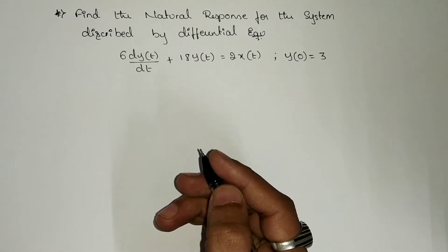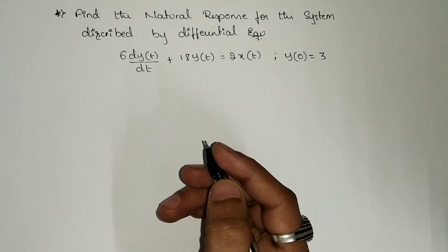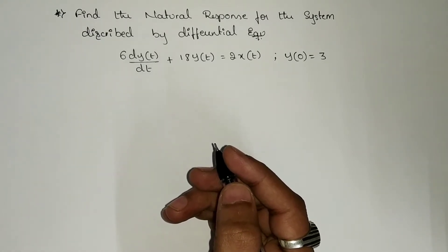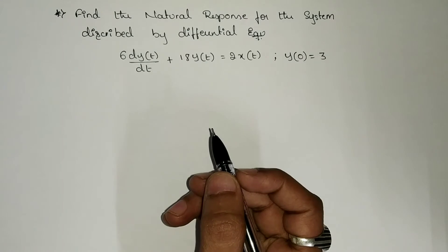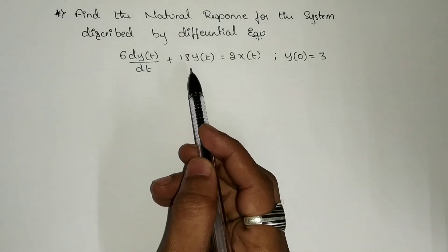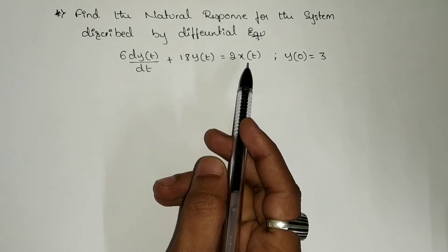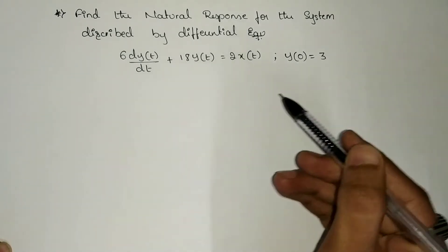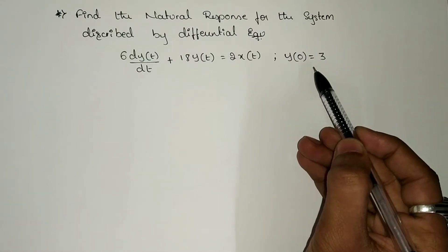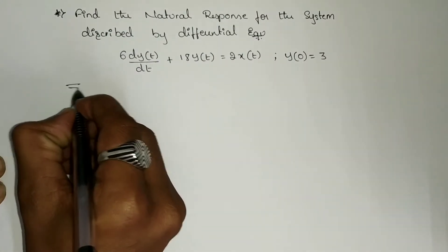Hello everyone. In this video we are going to discuss some problems on natural response given by differential equations. The first problem is: 6 dy(t)/dt + 18 y(t) = 2 x(t), given by an initial condition y(0) = 3.